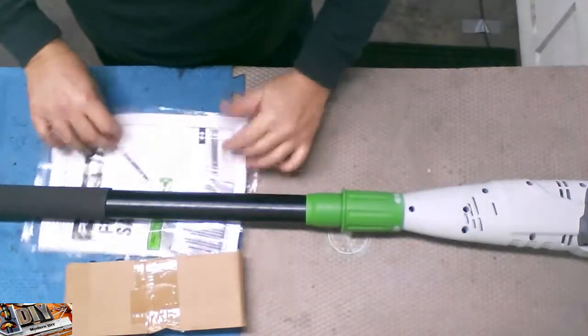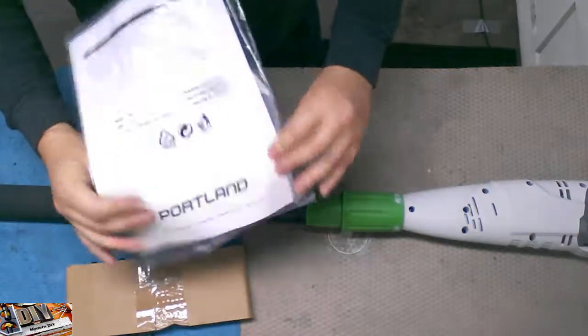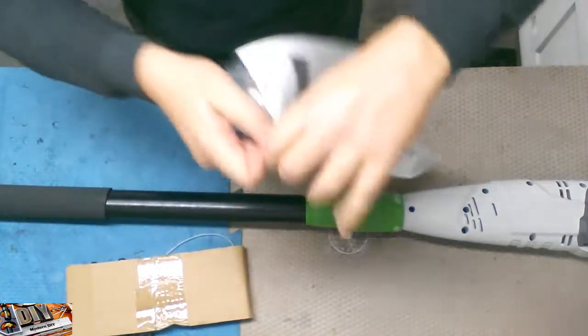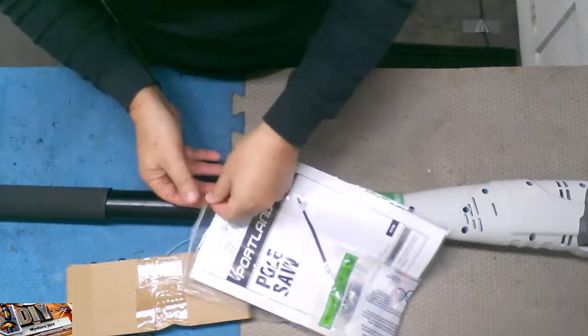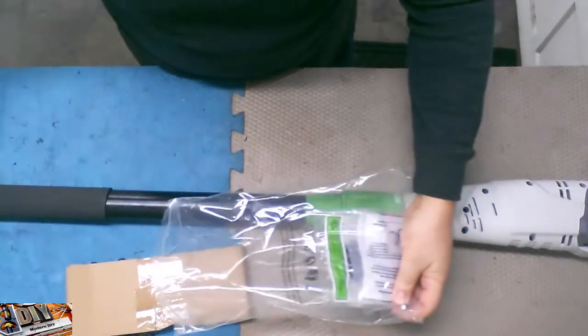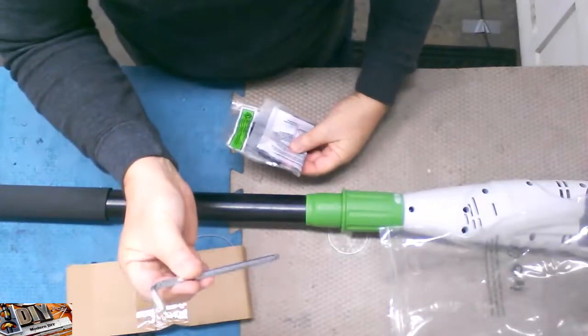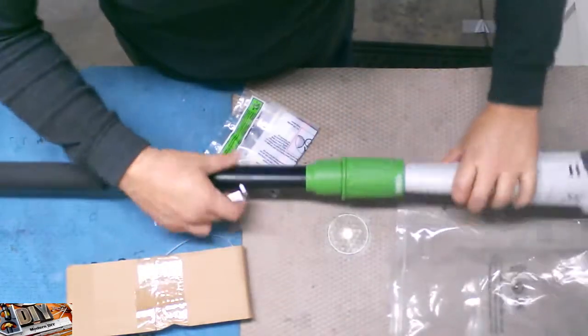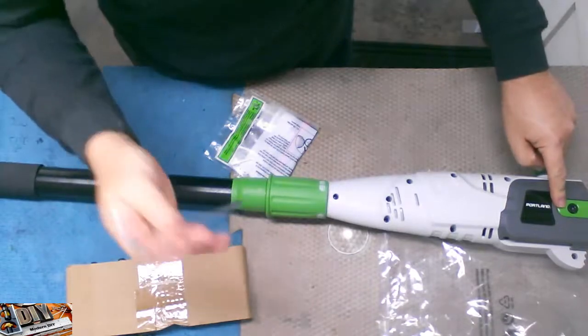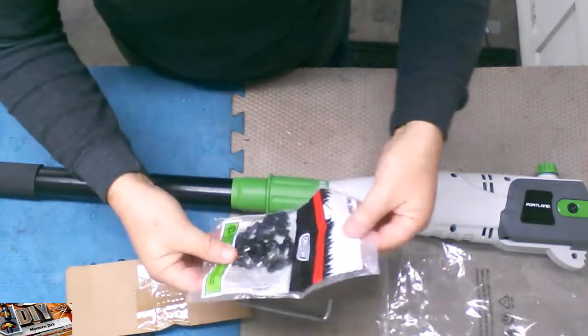And we have the instructions, which I know a lot of people won't read, but I'll go through it later. You never know if it may have something useful inside. Aside from all the precautions and so forth, there might be something of some use. So we have this Allen wrench, which more than likely is for tightening up the bar.